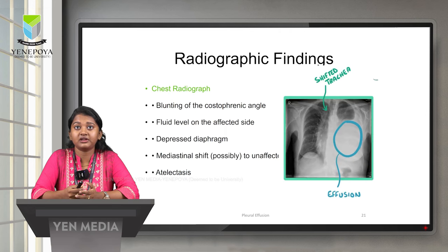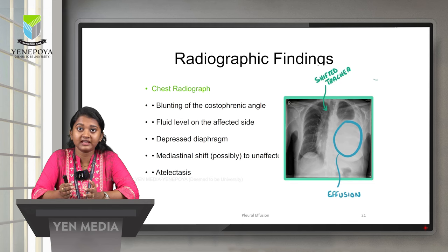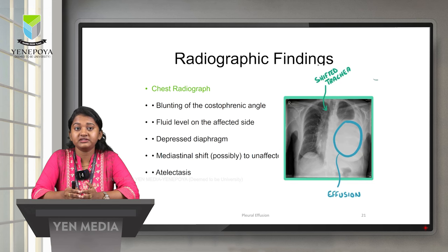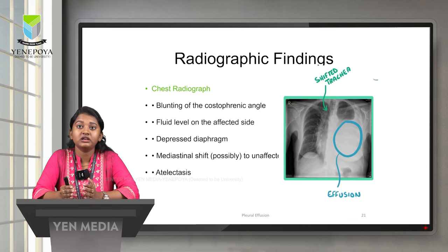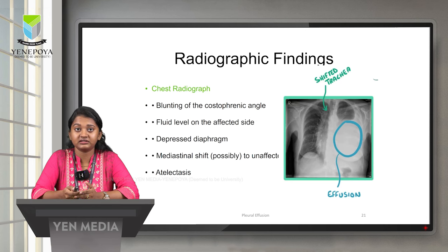On chest radiography, we can find blunting of the costophrenic angle due to the presence of fluid. Fluid level will be seen on the affected side, the diaphragm will be depressed, and there will be mediastinal shift toward the unaffected side. For example, if pleural effusion is on the left side, the mediastinal or tracheal shift will be toward the right. We can also see atelectasis on chest X-ray.